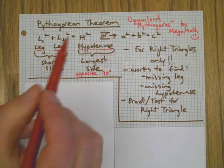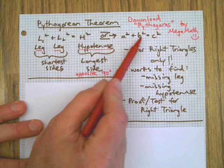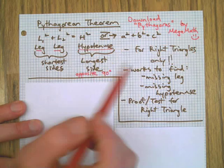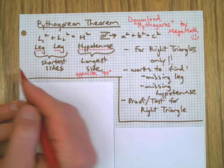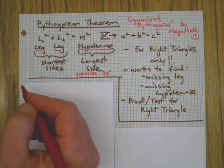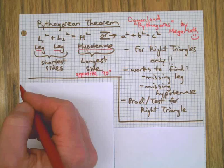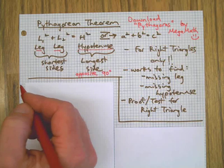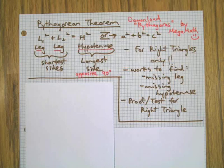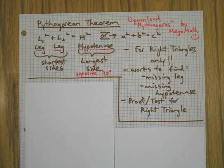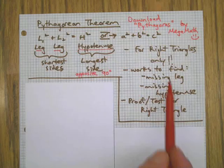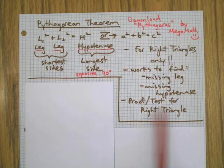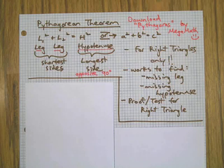You can also see this theorem as a squared plus b squared equals c squared. This only works for right triangles, so please don't use this for scalene or equilateral triangles. There are other methods for those types of problems. Today we're focusing only on right triangles. This works to find a missing leg, a missing hypotenuse, and it also works as a proof or a test to see if three numbers would make a right triangle.